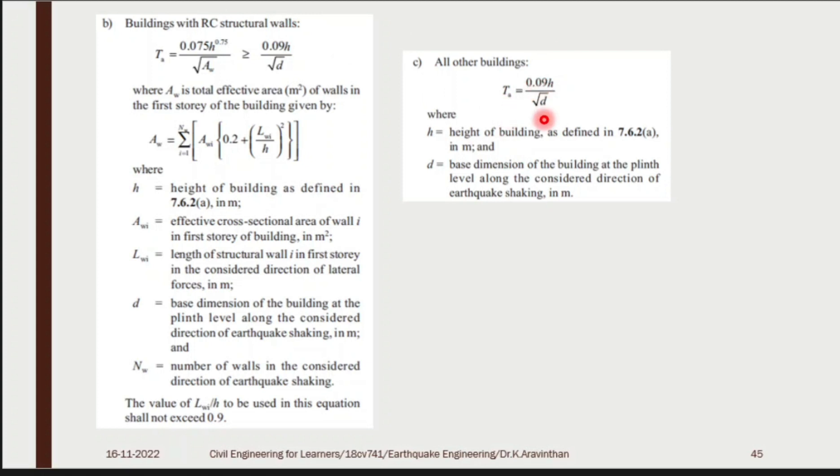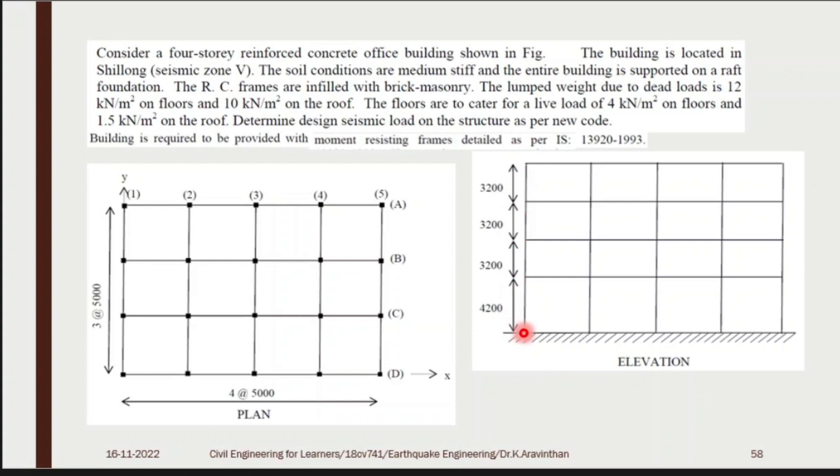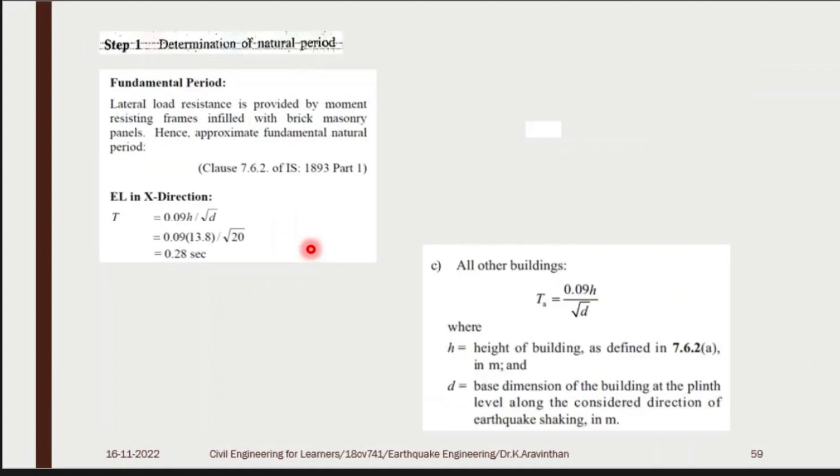You can find TA. What is your TA? 0.09 H by root d. What is the overall height? 13.8. Root d is what is the largest dimension? 4 into 5 meter, that is 20. Each bay carries 5 meter. 4 into 5 will be 20 at one direction. If earthquake comes at this direction, what will you do? If you are finding in a single direction, if earthquake comes under this axis, y axis, then it is okay. If earthquake comes under x axis, it can come in both directions. The wave can generate in whatever direction.